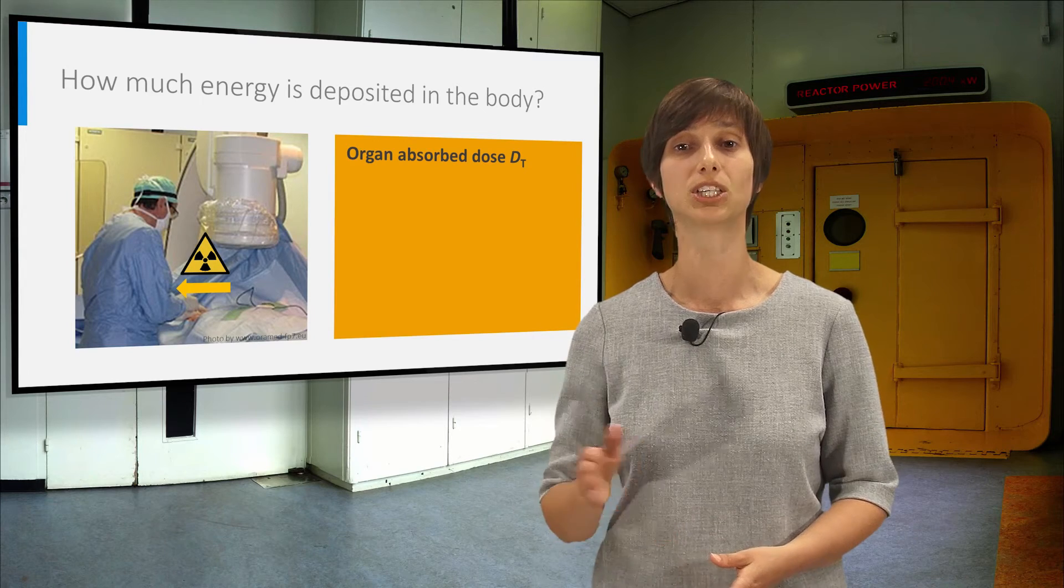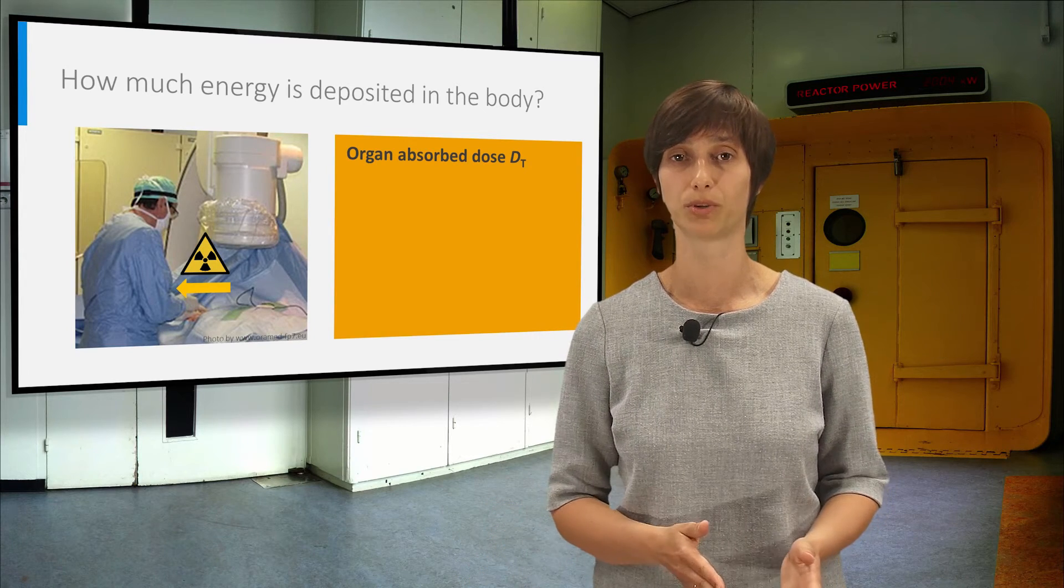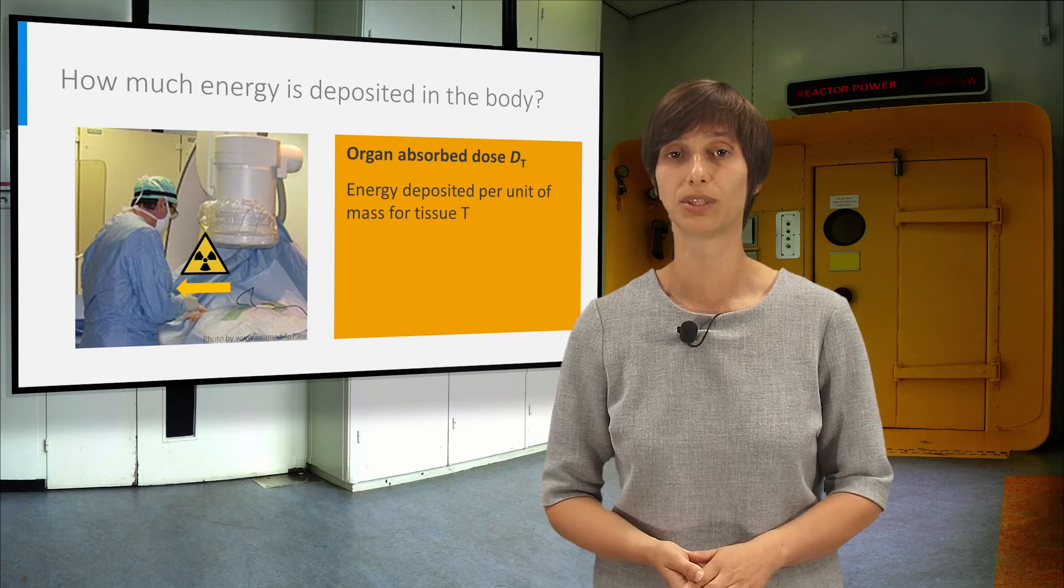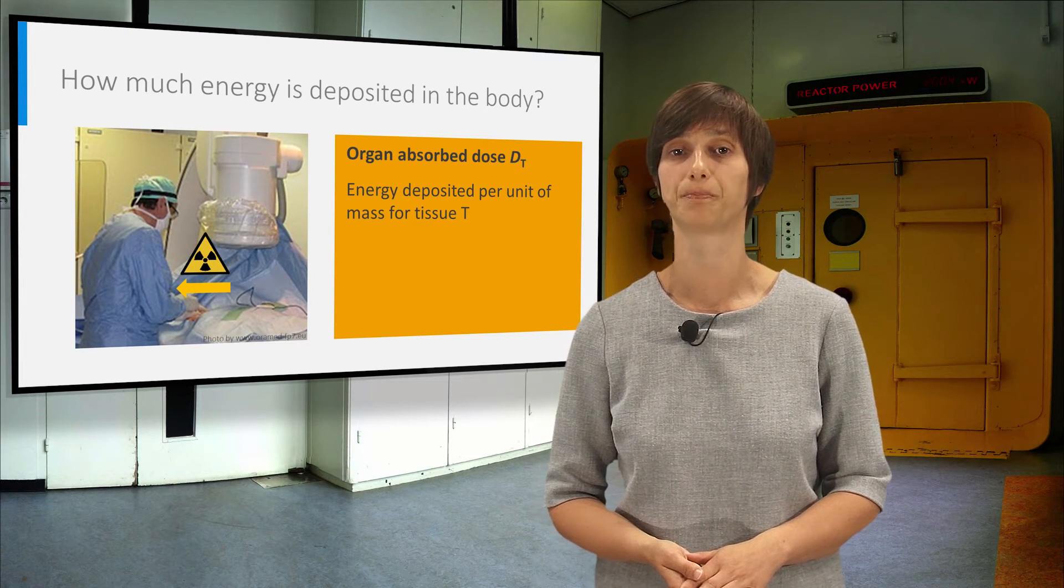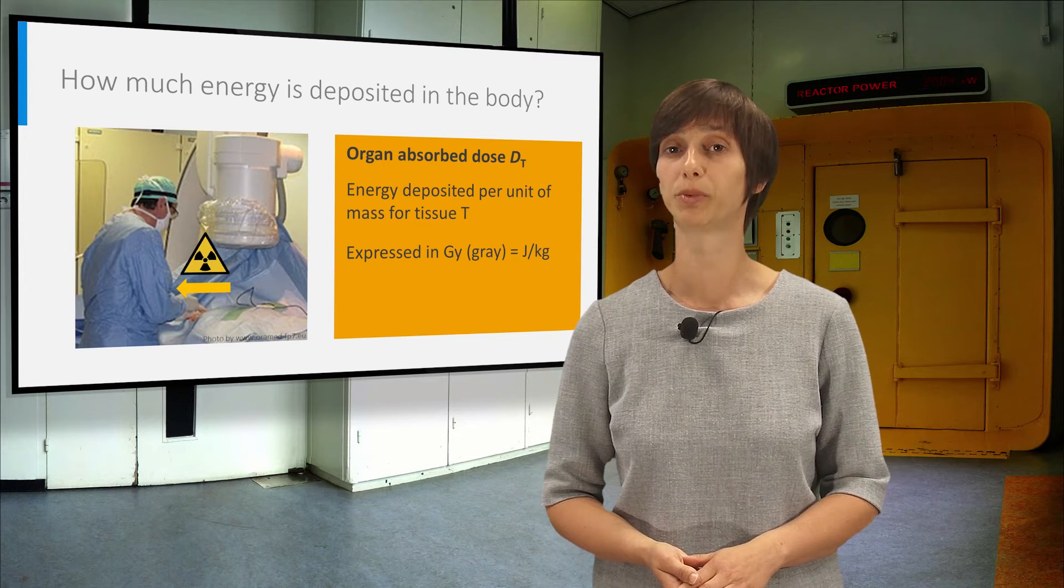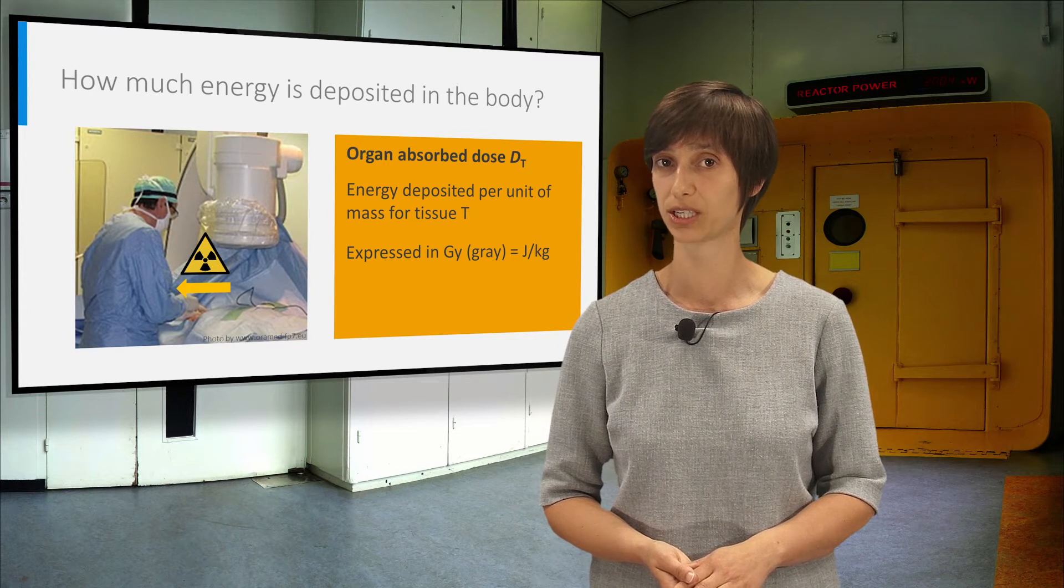This is characterized for each tissue by the organ-absorbed dose. This quantity gives you the amount of radiation energy deposited in the tissue T per unit of mass. It is expressed in joule per kilogram, which has been given a special name, gray.